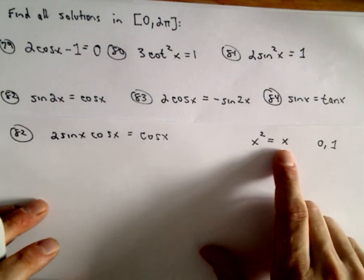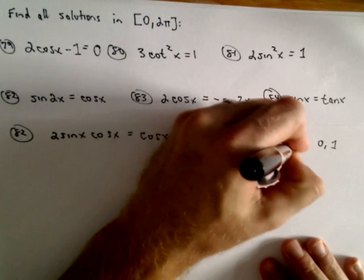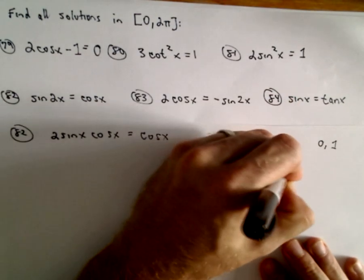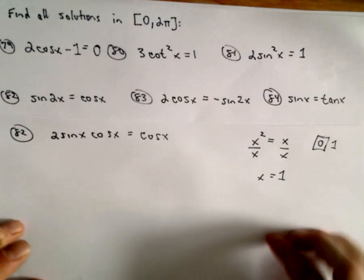If you plug 0 in, you'll get 0 equals 0. If you plug 1 in, you'll get 1 equals 1. But if you divided both sides by x, you would only get the solution x equals 1. You'd be throwing away one of these solutions by dividing both sides by x.